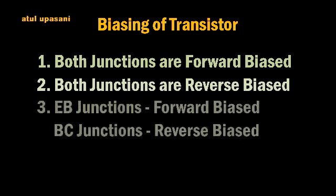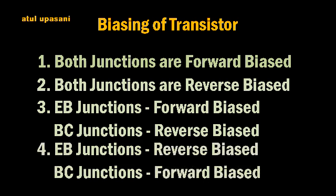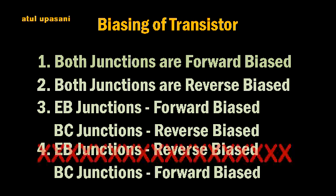The third type is when the emitter-base junction is forward biased and the base-to-collector junction is reverse biased. In this method the transistor acts as an active device because it can amplify the input signal and produce a larger output signal — so the transistor is in the active state. The fourth combination — emitter-base reverse biased and collector-base forward biased — is meaningless, because if the emitter-base junction is reverse biased there will be no current at the output. So this combination is not used.